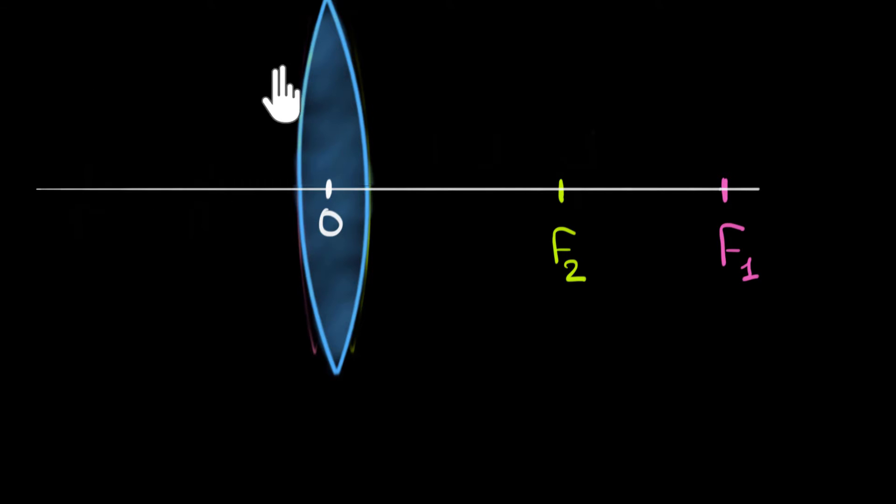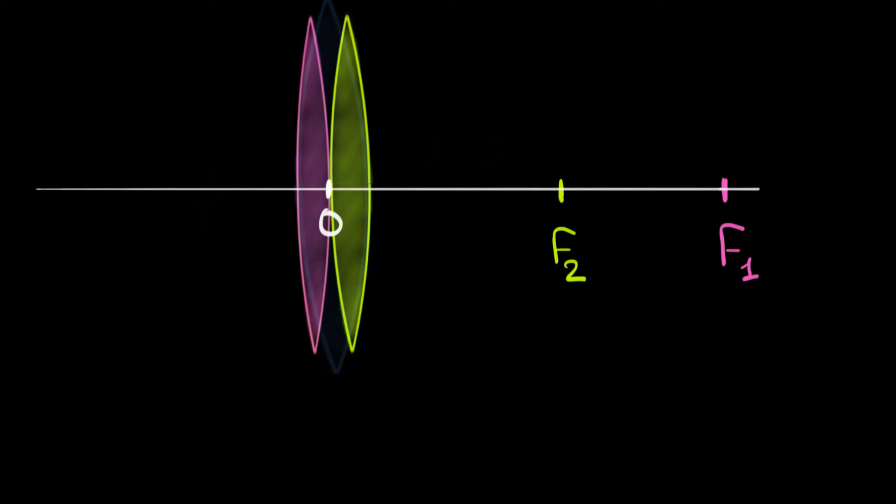If we shoot parallel rays of light on this and find out where the rays get focused, that point itself will represent the effective principal focus, and then that length will represent the effective focal length. Let's go ahead and shoot two parallel rays of light. If you look at this ray along the principal axis, it is passing through the optic center, so this ray will go undeviated.